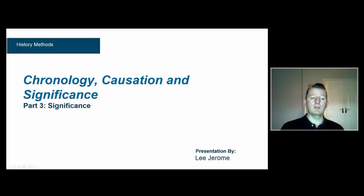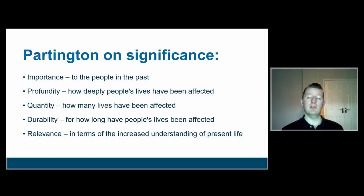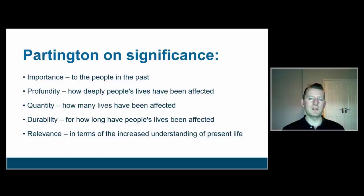In part three we're going to talk about significance. The first way I want to approach significance is by using a fairly well-known model — Partington — who reflected on what we mean when we talk about historical significance. What is it that makes something significant? Partington's answer was that it generally fulfills one or more of these criteria.